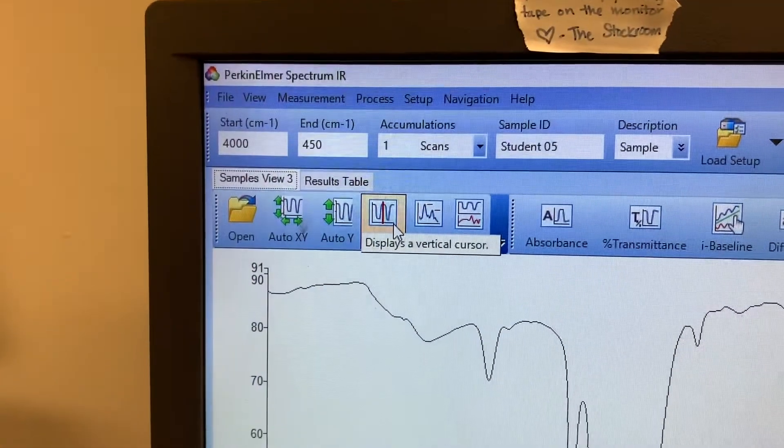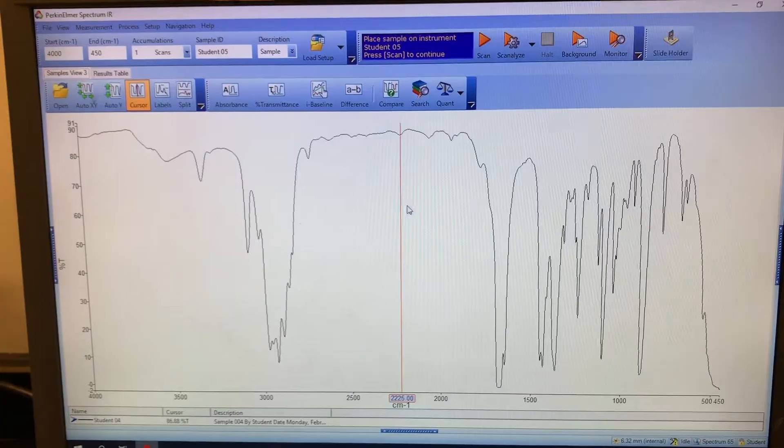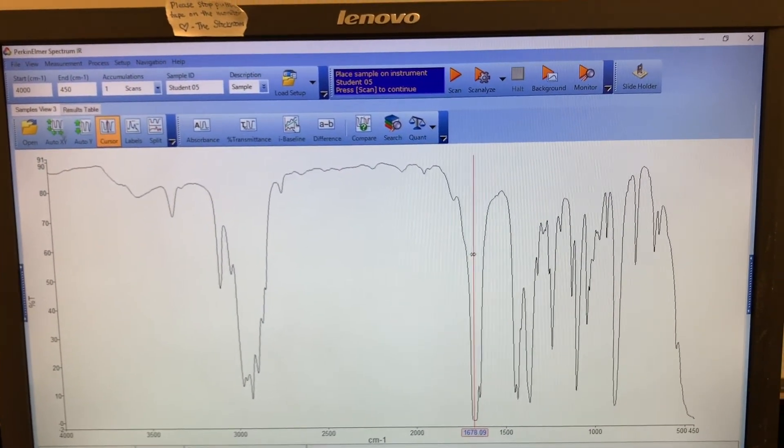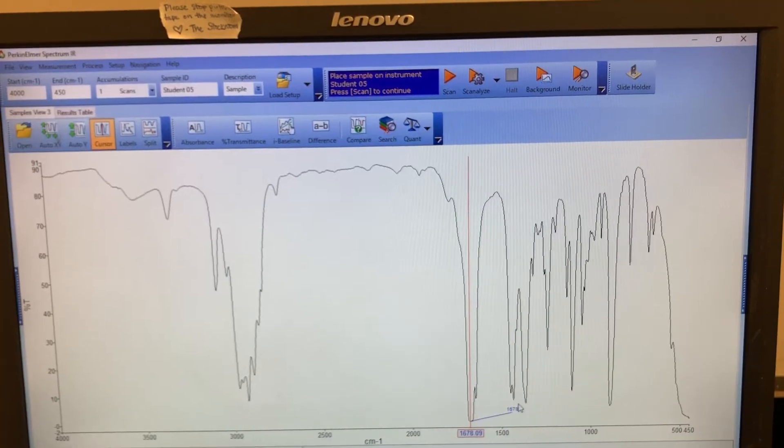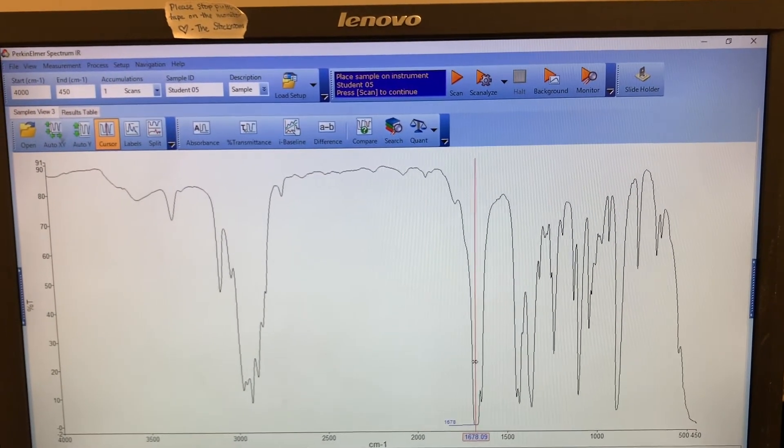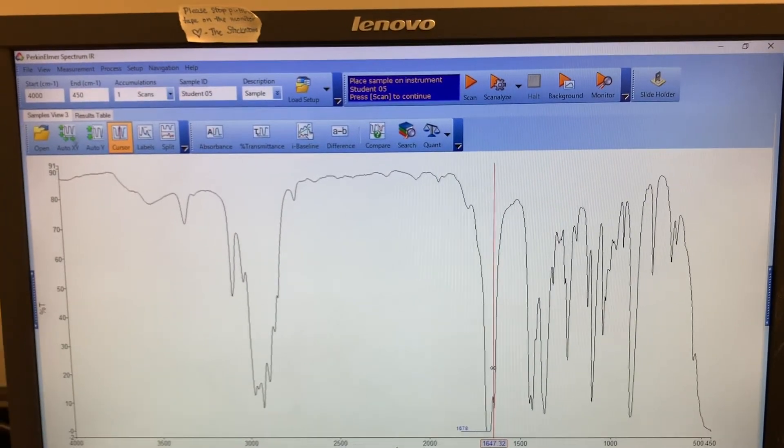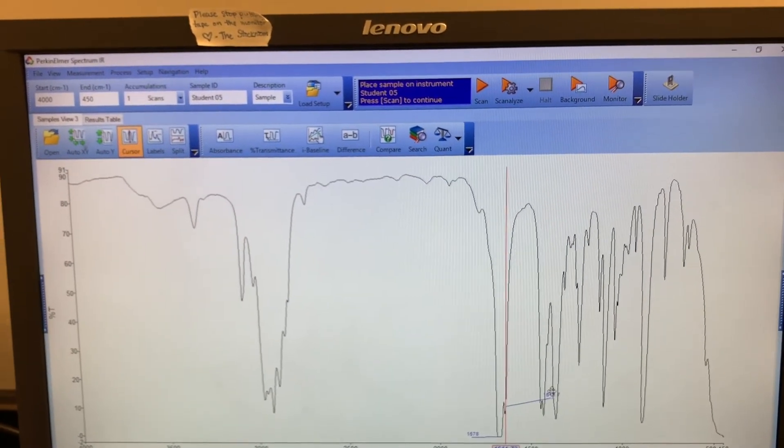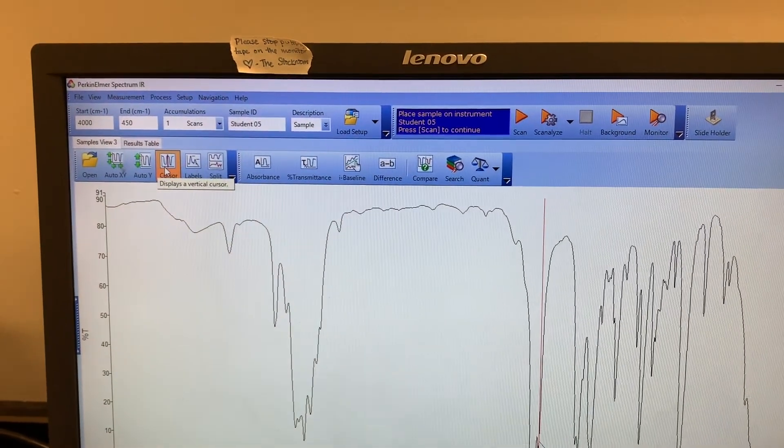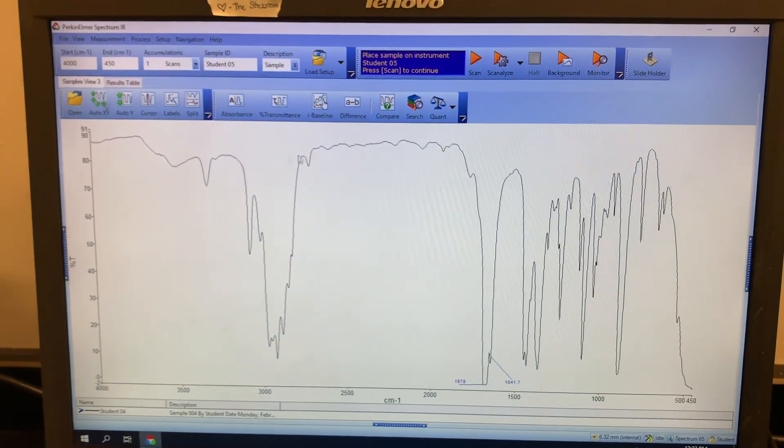Instead I'm going to go to this cursor button. This gives me this nice little line here so I can bring it over to that carbonyl peak. If I double click, I get a number. I can drag it over to a nice place, I can drag it over to this next little peak, double click. Those numbers overlap, so I'll just put it right there. To get rid of that cursor, you just hit cursor again, and that's how you get your spectrum.